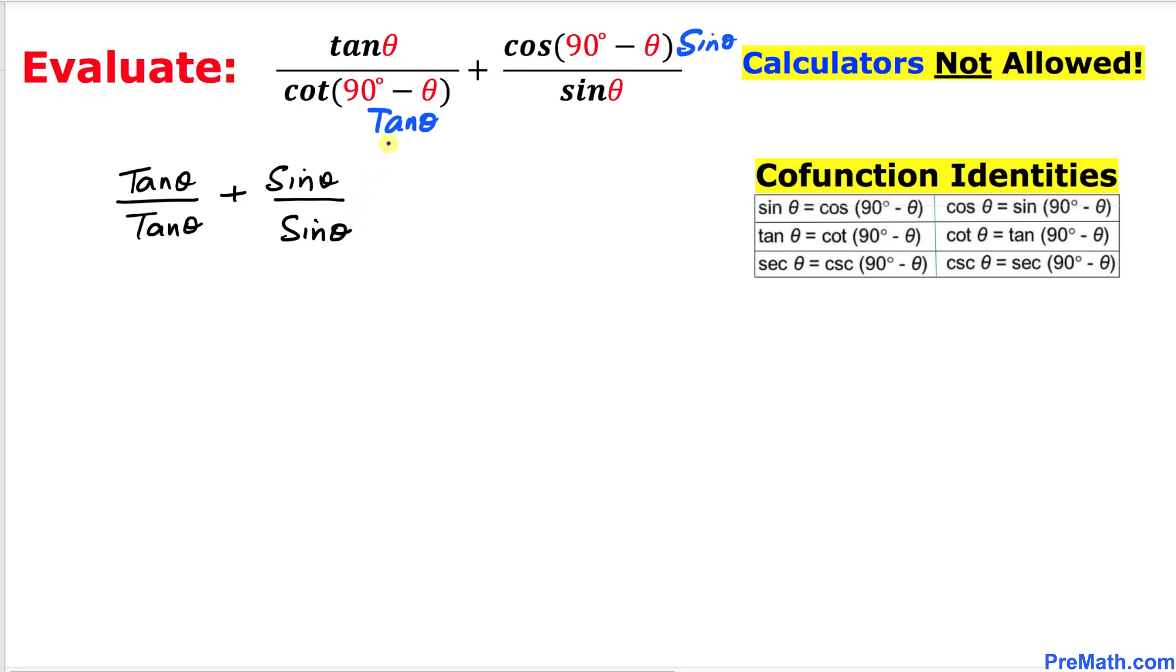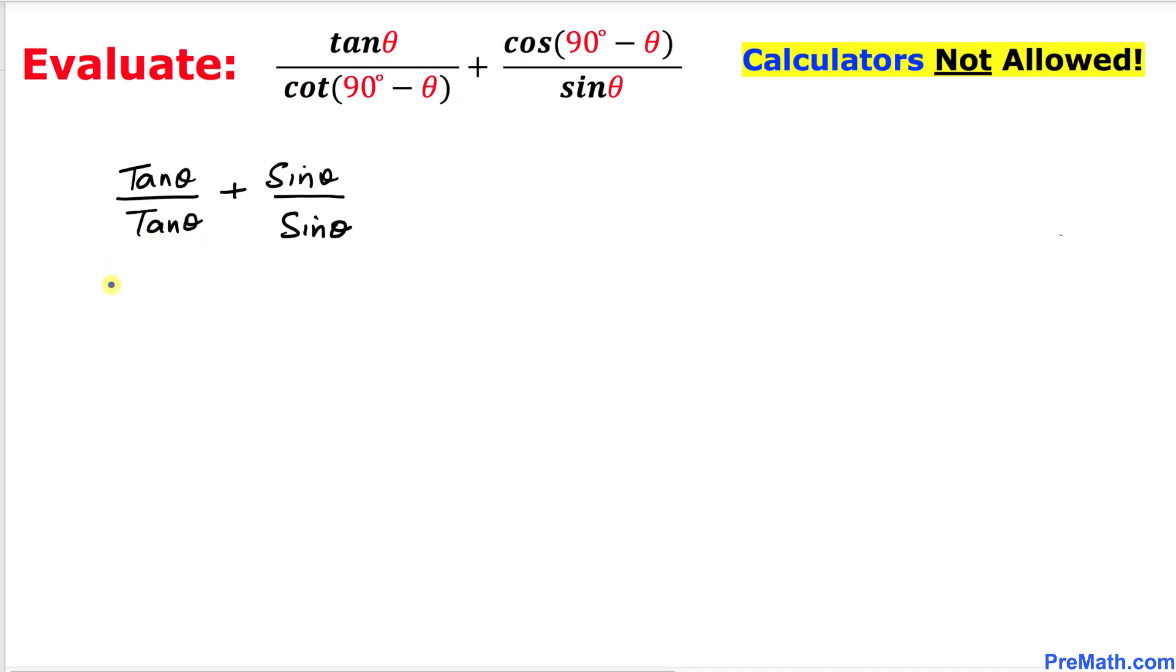I have replaced tangent of θ over here and sine of θ over here. Now we can see tangent of θ divided by tangent θ is simply one, plus sine theta divided by sine theta is one as well. So this turns out to be two as our answer.